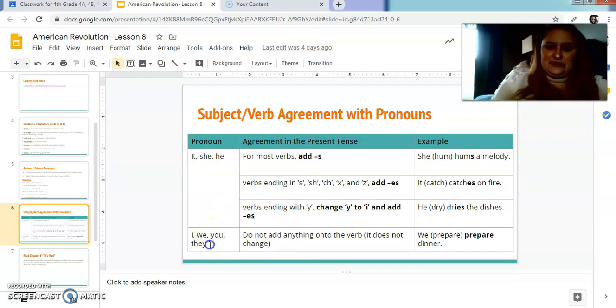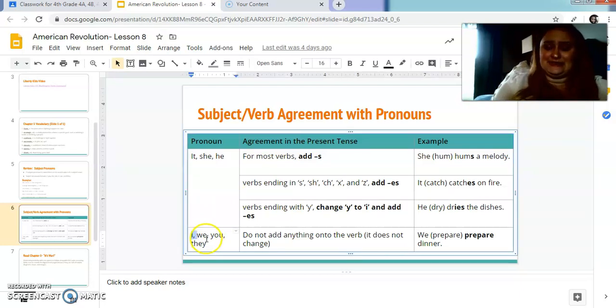If it is plural, or if you have I, if I'm saying I did something, you don't change the verb. You just keep it the same. So I, we, you, and they, you don't add anything. It does not change. So if I want to say we prepare dinner, I just literally keep it we prepare dinner. Or if I want to say I prepare dinner, I don't say I prepares, even though I'm only talking about one person. So I is the exception to the rule. So even though I'm only talking about one person, I wouldn't say I prepares dinner. It sounds really crazy, right? Or like I hums a melody. I would say I hum. So I don't actually change the verb if I have I. So that's the exception to the rule.